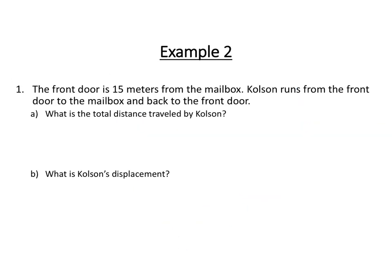All right, and last one. So the front door is fifteen meters from the mailbox. Colson runs from the front door to the mailbox, and then back to the front door. What's the total distance traveled by Colson? All right, so again, I like to diagram. So here's Colson at the front door. I'll put front door, okay, and then here is the mailbox over here, okay?